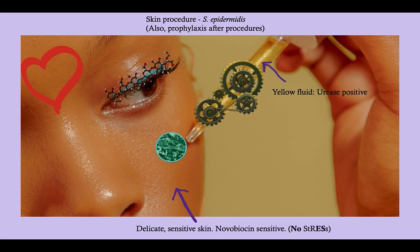Notice the yellow fluid in this syringe here. Ammonia is yellow, and urease catalyzes urea into ammonia. So yellow fluid — urease positive.